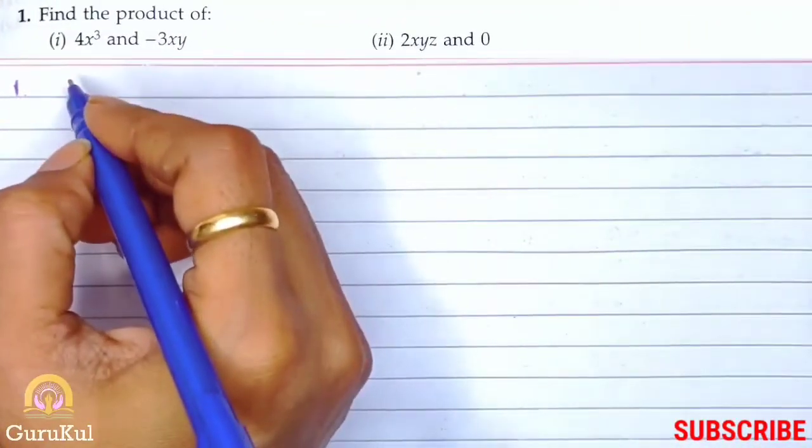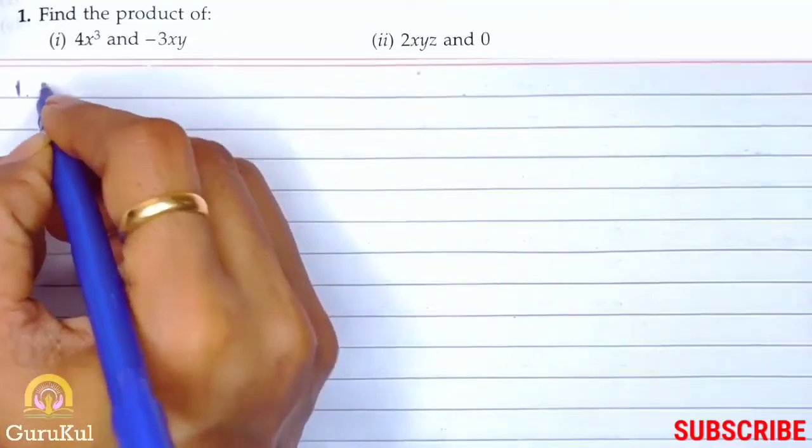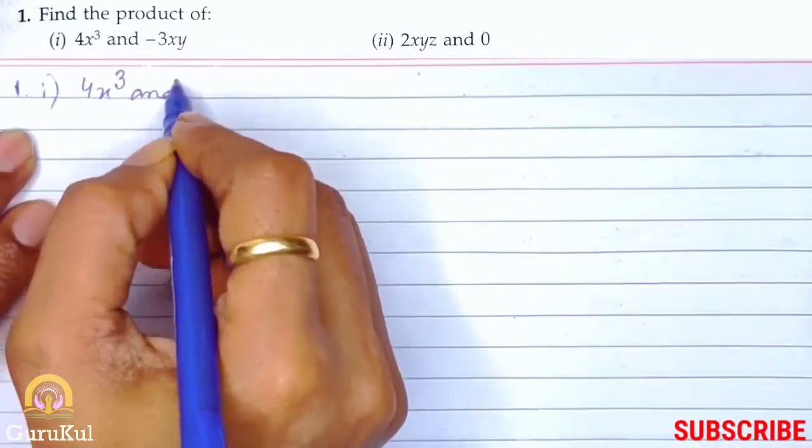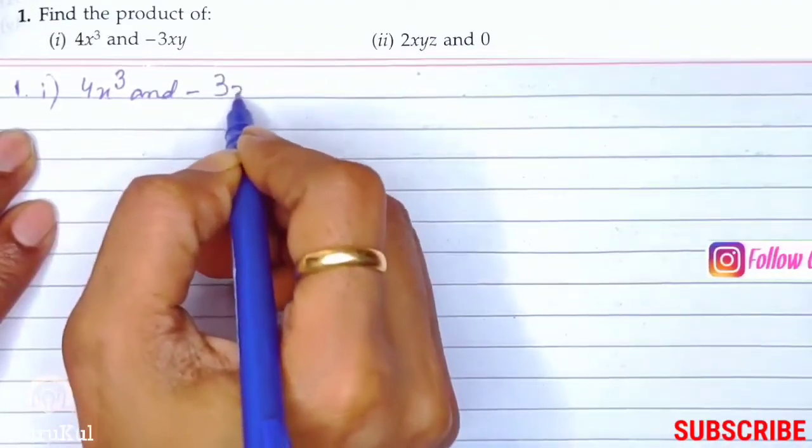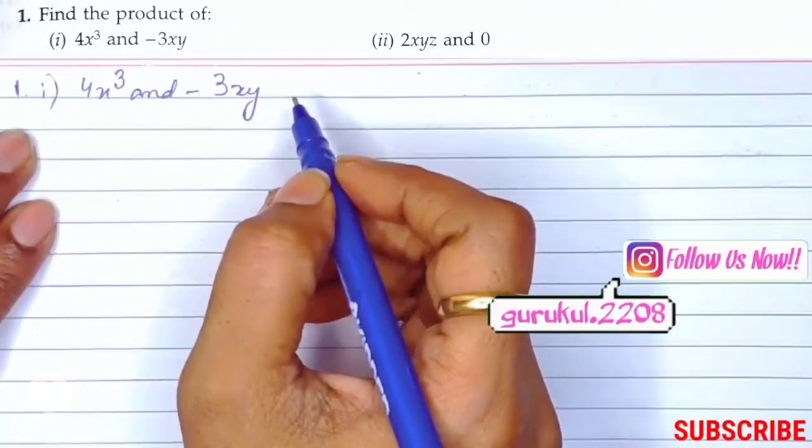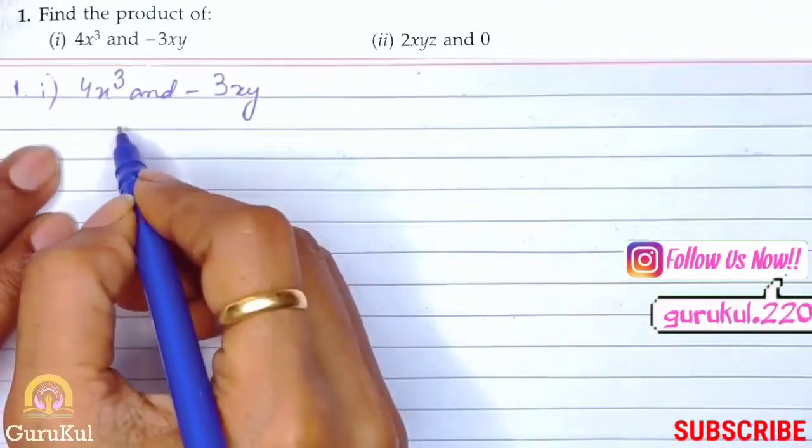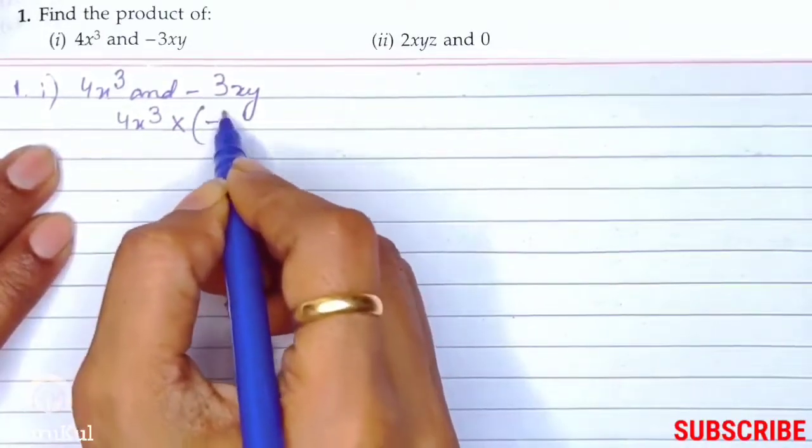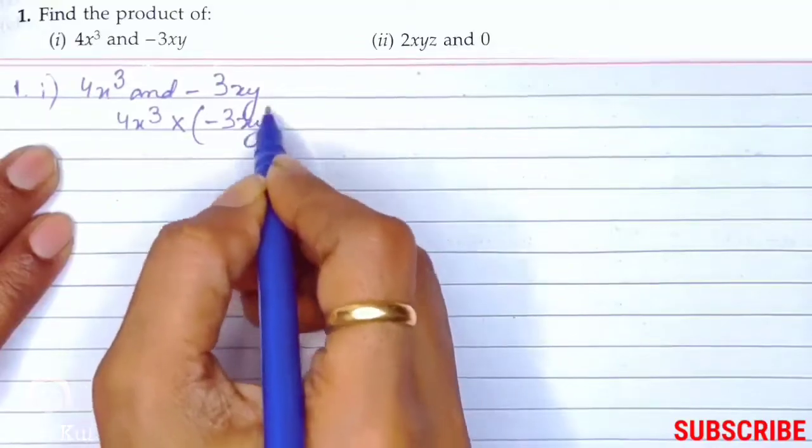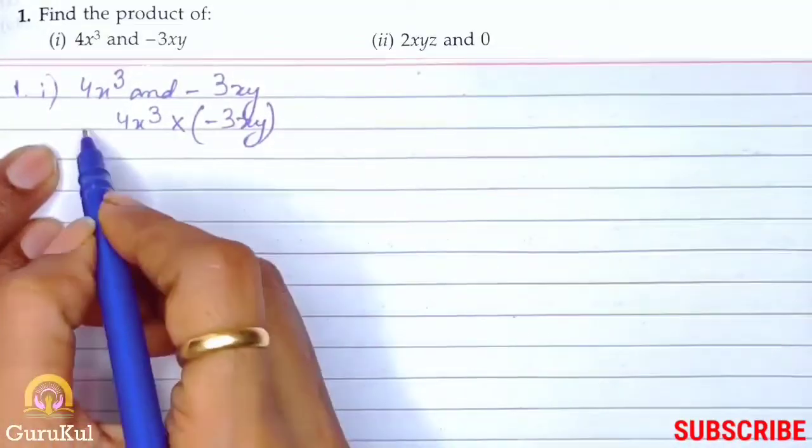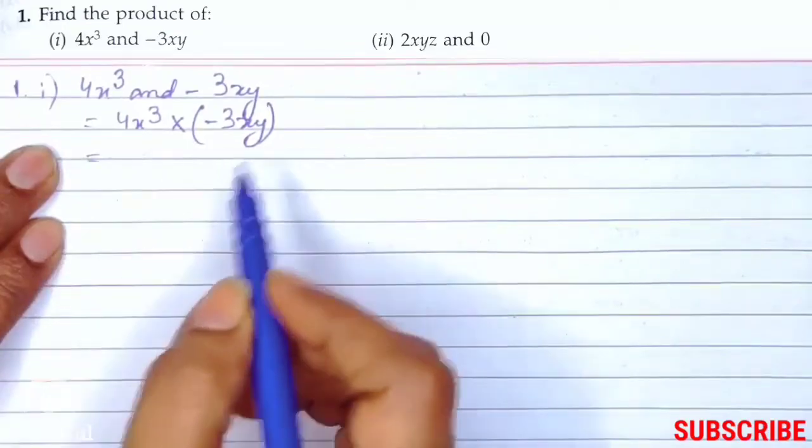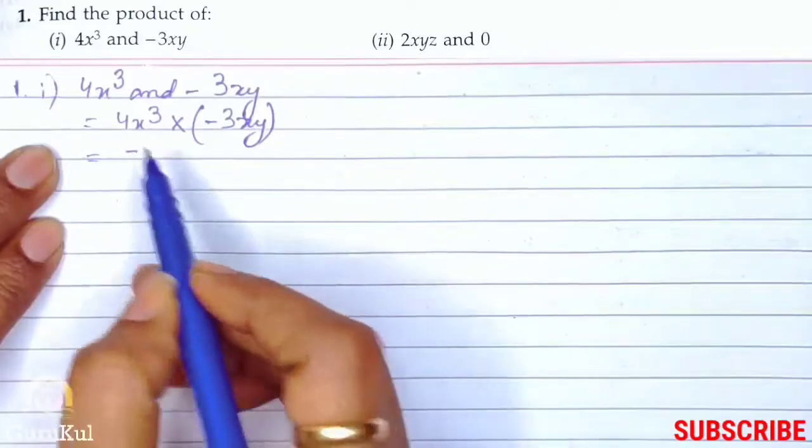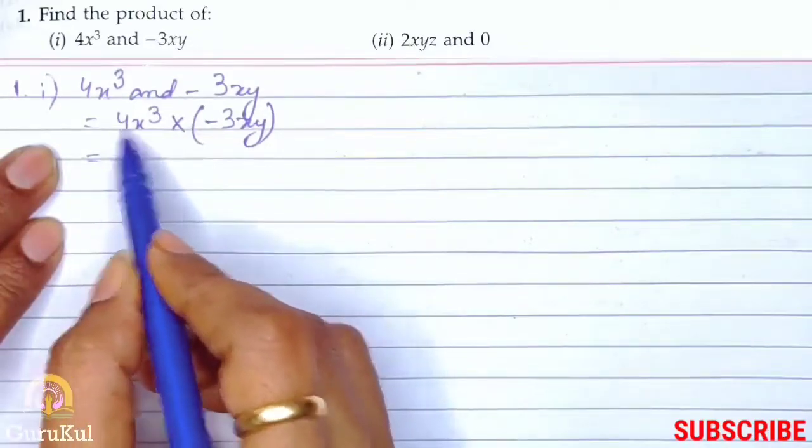Question number 1. We need to find the product of first part: 4x cube and minus 3xy. Product means we need to multiply. So 4x cube into bracket minus 3xy. This is plus and minus, so the sign is minus. Plus into minus is minus.